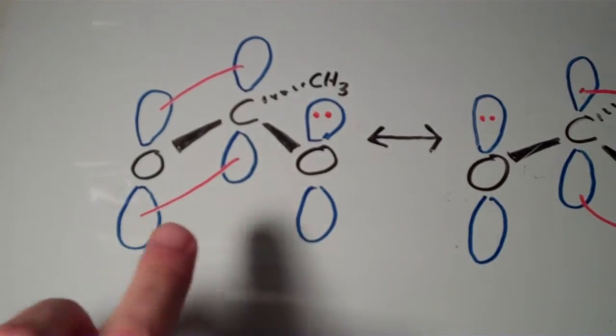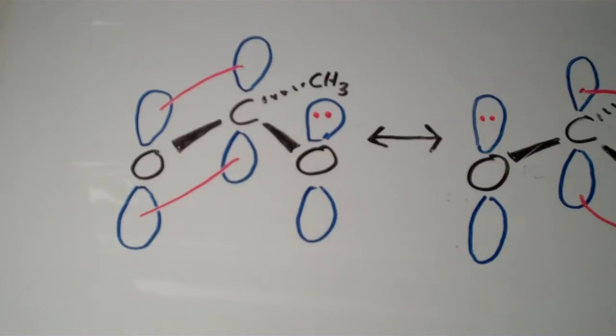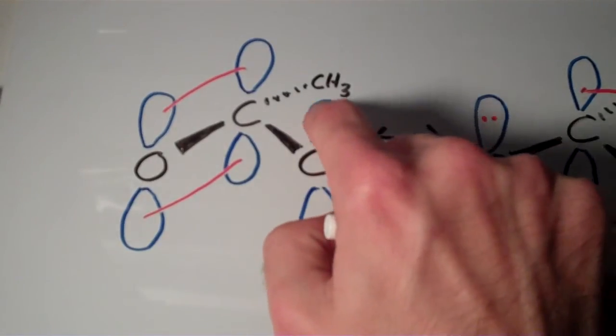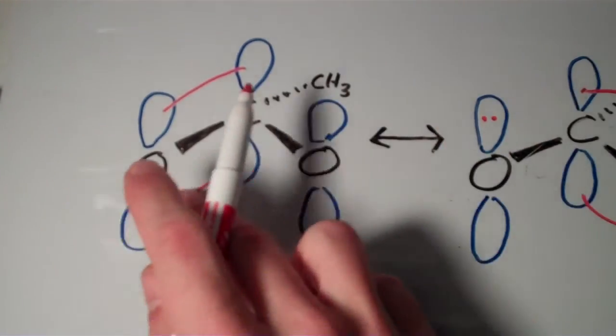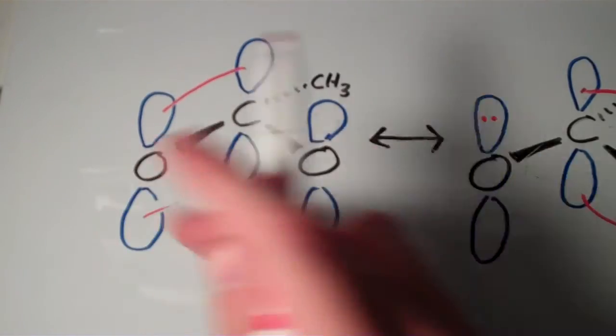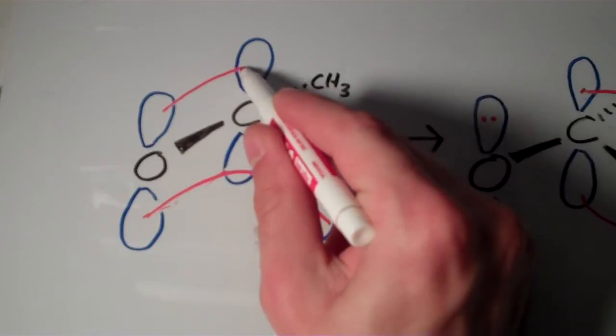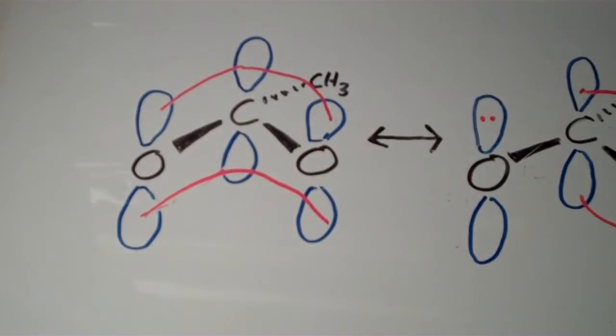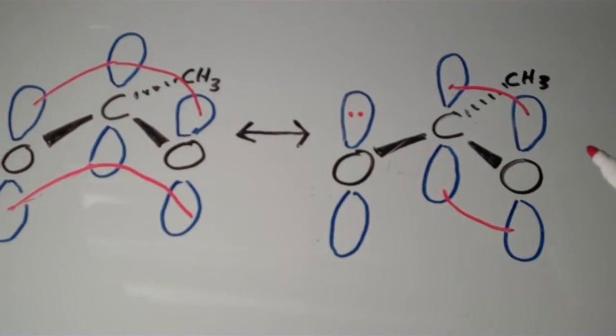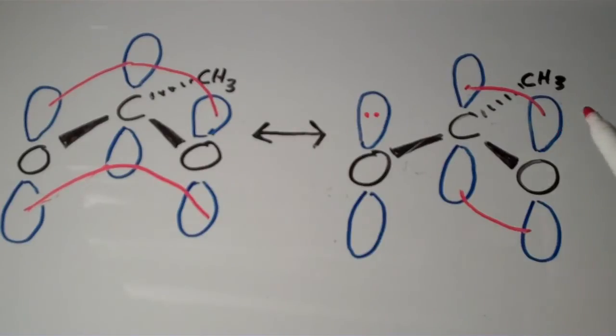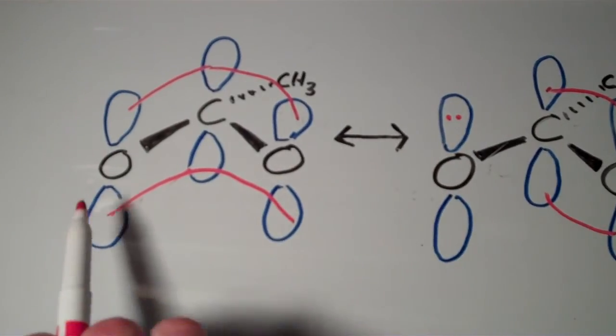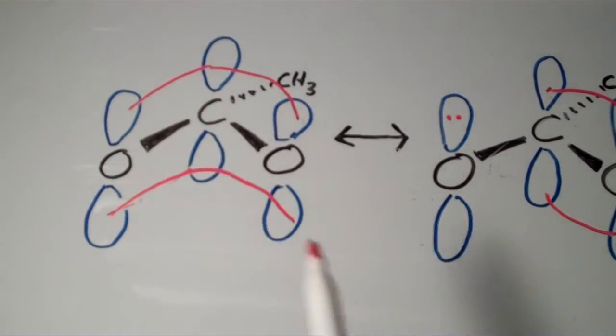So if you turn your attention to this resonance form right here, what's really going on is there's a delocalization of electrons, and I'll try to draw that. So instead of them being isolated as they are in this resonance form where you have two electrons as a pair and then the other two as a pi bond, you have all four of the electrons delocalized over this entire three-atom system.